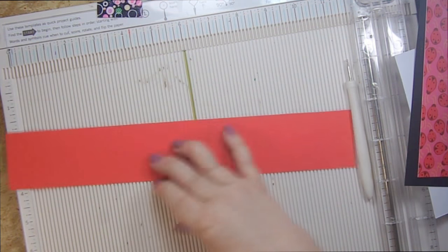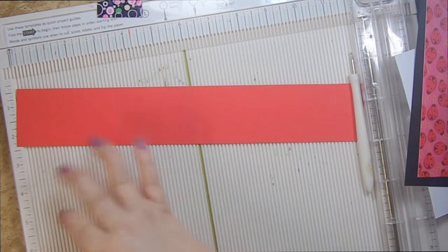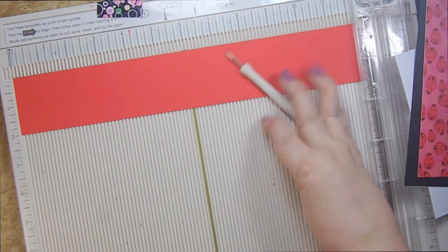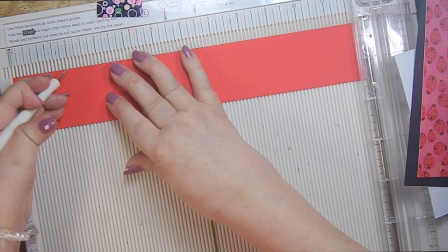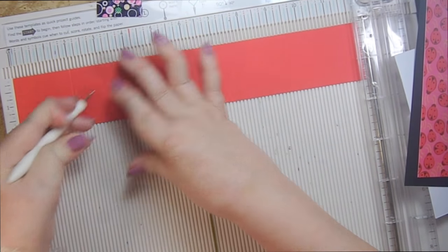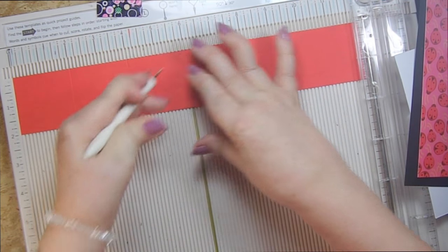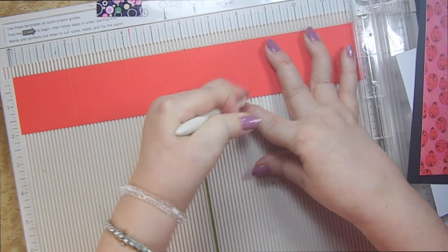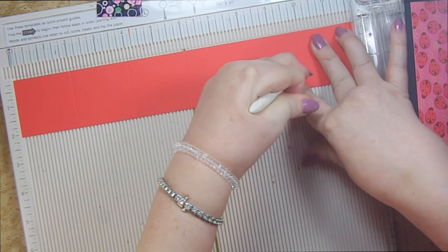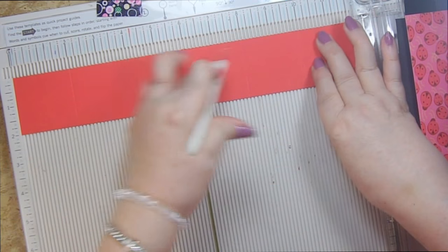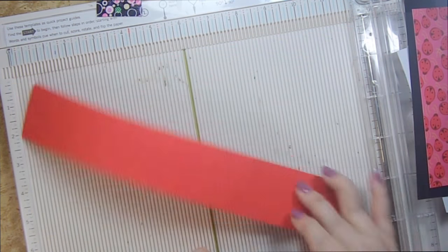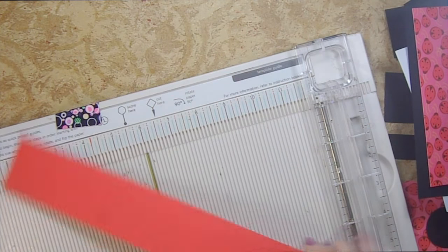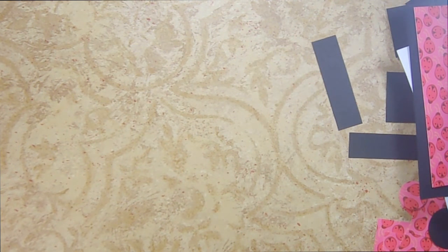The first thing we're going to do, you need four strips of 12 inch by 2 inch tall paper and we're going to score these at 2 inches, 4 inches, 6 inches, 8 inches, and 10 inches. So they're scored at every two inches. I already scored the other three and then we'll go on to the other papers you need.